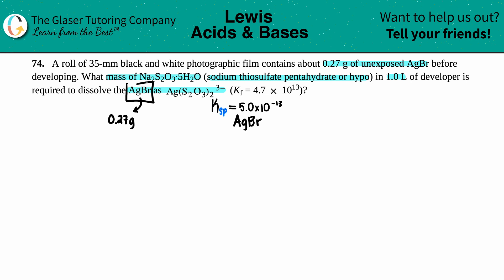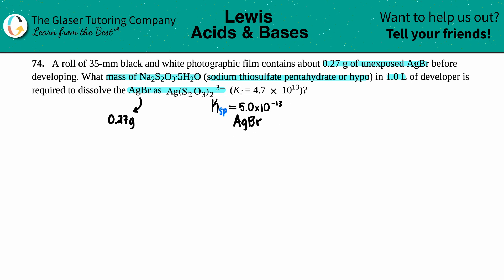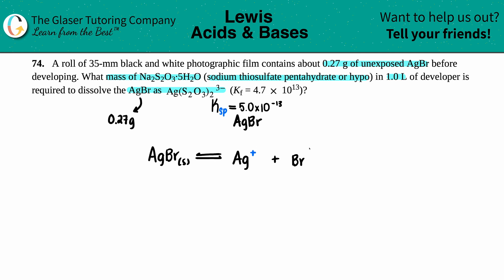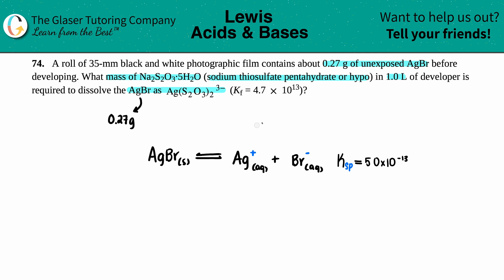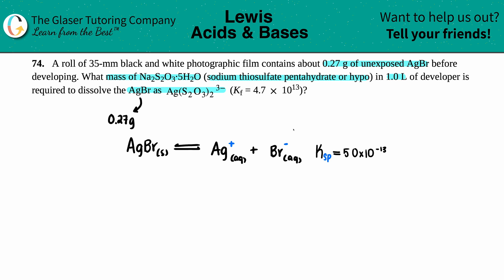There are two things here. AgBr is generally a solid unless it gets dissolved, so AgBr has a Ksp. Let's write that out: AgBr solid comes to equilibrium with its two ions — Ag⁺ and Br⁻ — both aqueous, since Ag always has a +1 charge and Br a -1 charge when bound with the metal. I'm going to write the Ksp over with this equation.